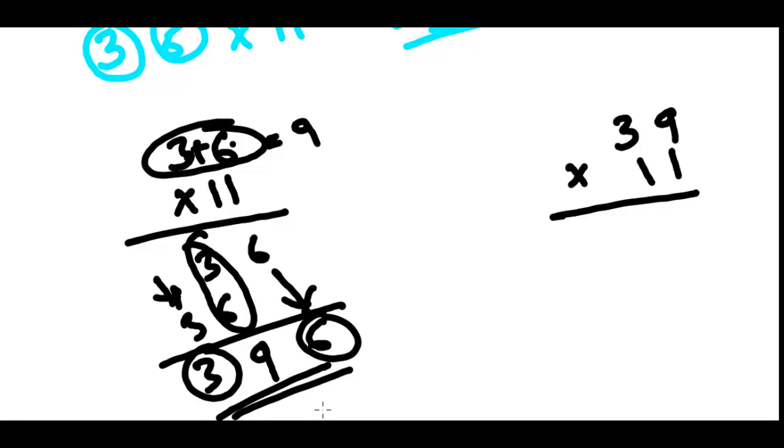Now, is it always like this? Yeah, it's always like this. But what happens if the sum of these two numbers is more than 10? Like here, 39 times 1, that is 39. And again, 39 times 1, that is 39. So this is the traditional method. I mean, the longer method.